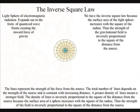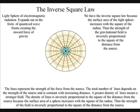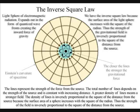We have the inverse square law because the surface area of the light sphere increases with the square of the radius. Thus the strength of the gravitational field is inversely proportional to the square of the distance from the source.